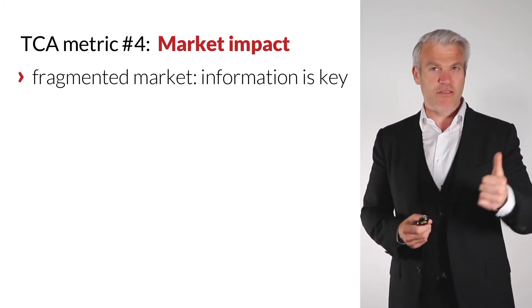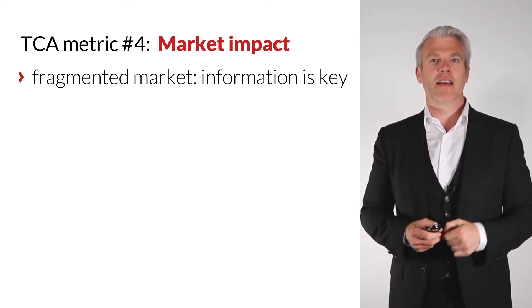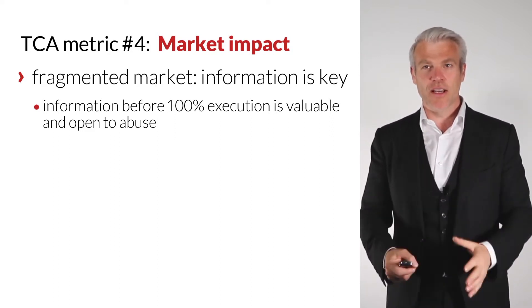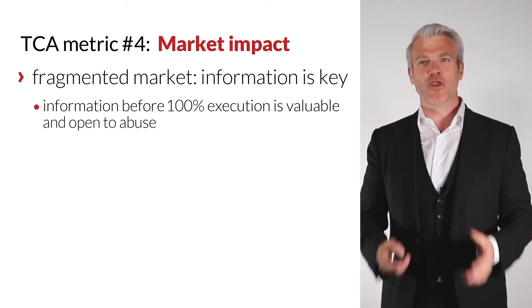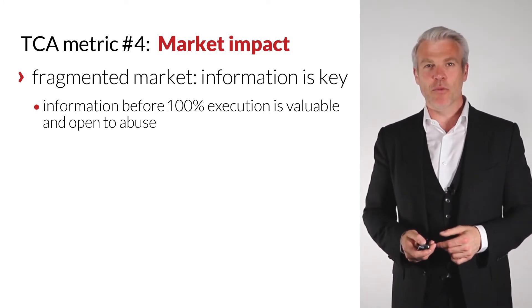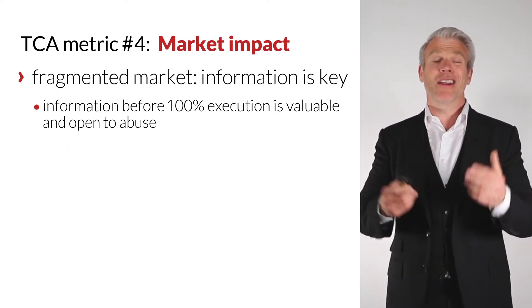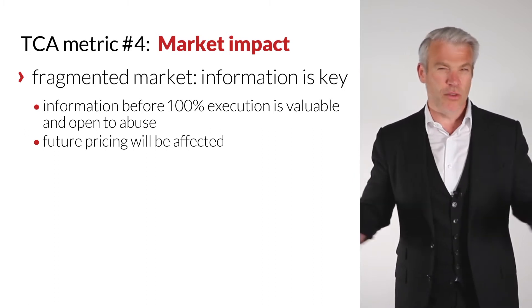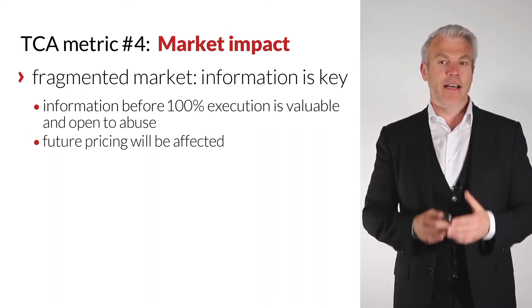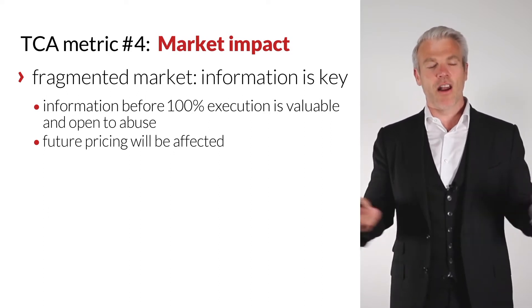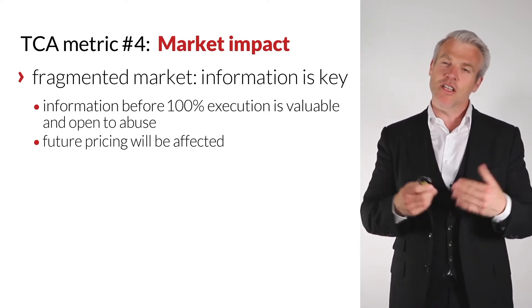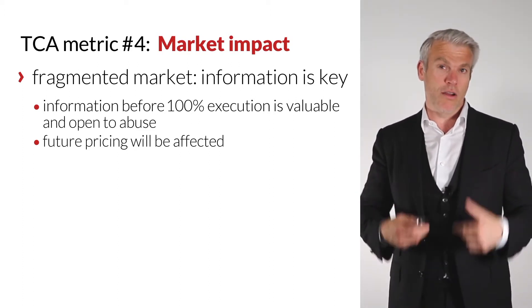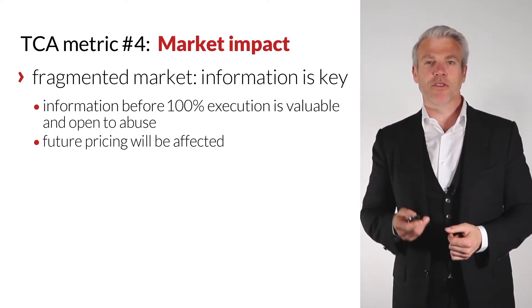Specifically, the first thing to remember with market impact is that execution information received before your full cycle is complete is valuable and open to abuse. The second thing is your market impact will affect your future pricing, and a lot of your liquidity providers will tell you that today. If you smack the market and the market runs away immediately, it's unlikely you're going to come back to the same market and see the same spread. This is why you engage two types of algos — fast algos or slow algos — and you can decide what market impact you want to have.